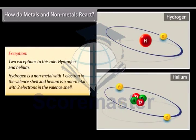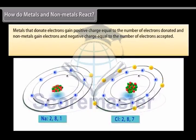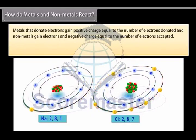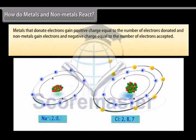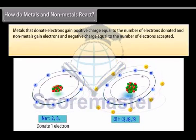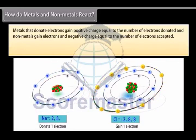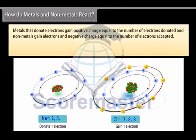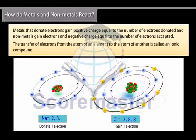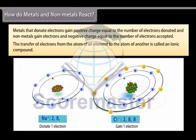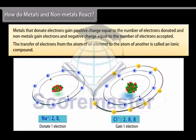Metals that donate electrons gain positive charge equal to the number of electrons donated and non-metals gain electrons and negative charge equal to the number of electrons accepted. When a metal atom donates 1, 2 or 3 electrons from its valence shell to another non-metal atom that has the ability to accept these electrons, it is known as electrovalency. As a result of this, both these atoms form the structure of an inert gas. The transfer of electrons from the atom of an element to the atom of another is called an ionic compound.